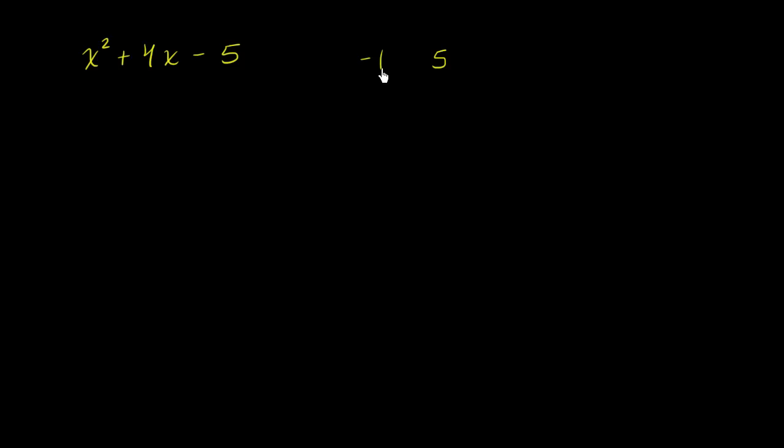The other option would be 1 and -5, since we're dealing with the factors of 5 and 5 is a prime number. The product would be -5, but if you add these two numbers, you get -4, so we're going with -1 and 5.